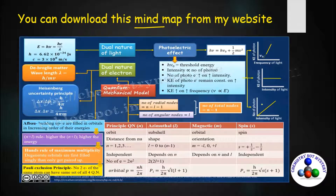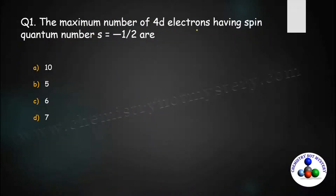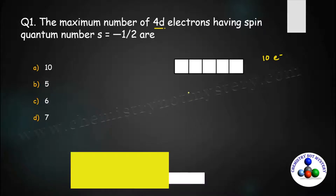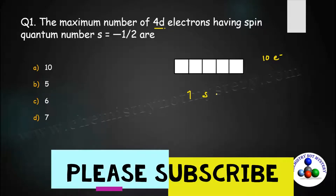Let's try to solve the first question. The maximum number of 4d electrons having spin quantum number s equal to minus half — find out the maximum number of electrons of 4d. In d, there are 5 orbitals, which means a maximum of 10 electrons can be filled. For upward spin, the spin quantum number is always plus half, and for downward spin, it is always minus half.